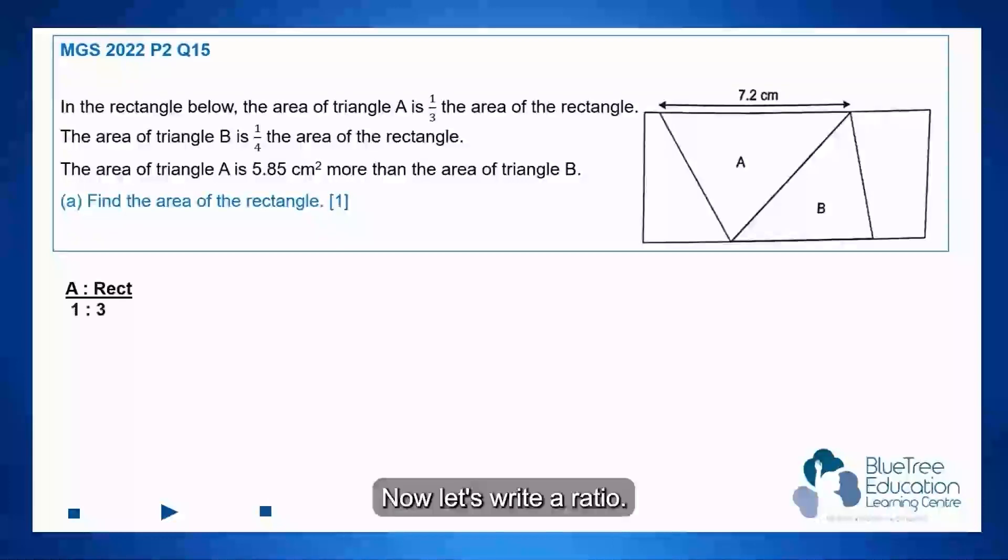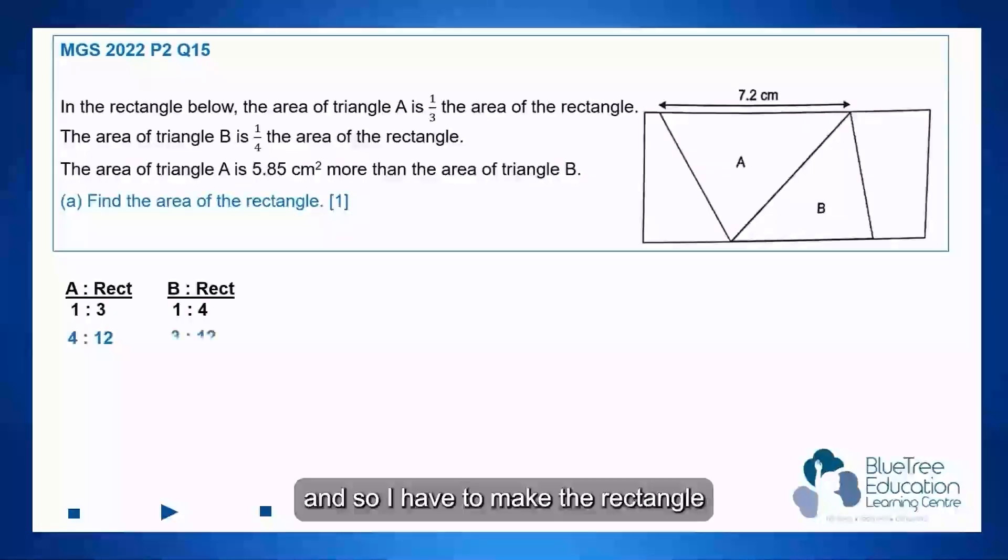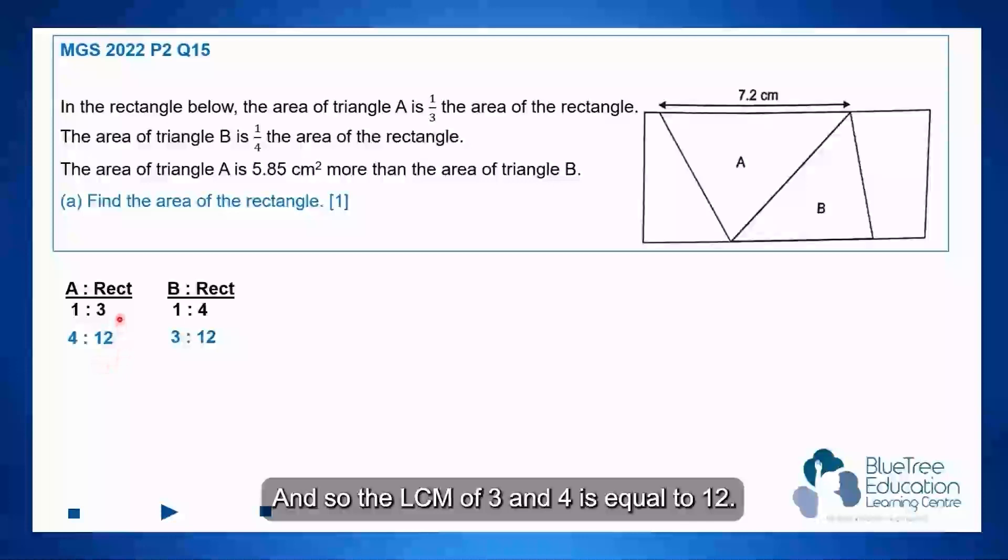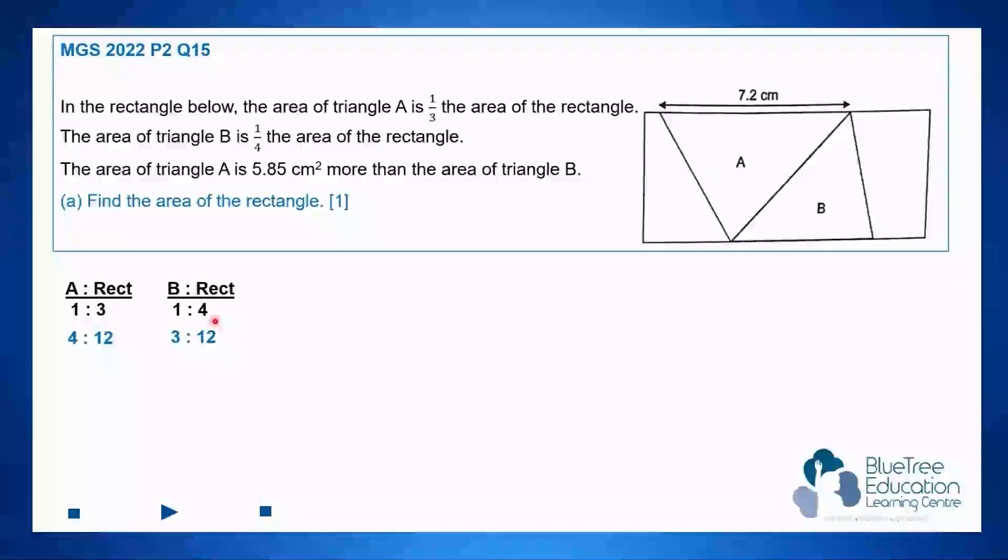Now let's write the ratio. A to rectangle is 1 to 3. B to rectangle is 1 to 4. And so I have to make the rectangle units the same because it's a repeated identity. The LCM of 3 and 4 is equal to 12. So the first ratio I multiply by 4, and the second ratio I multiply by 3.